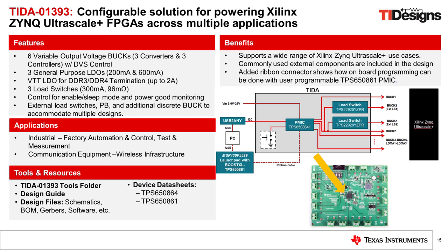Here is a one-page overview for the TIDA-01393 reference design, which shows how the TPS-650864 and TPS-650861 can be used to power the Xilinx Zynq Ultrascale Plus MPSOC family. The TPS-650861 variants are pre-programmed for the Xilinx Ultrascale Plus MPSOCs, and samples can be ordered on TI.com. If you are using the TIDA-01393 reference design as a starting point and need to change the OTP programming, follow the programming flow for the TPS-650861 and the OTP generator source files available for download.